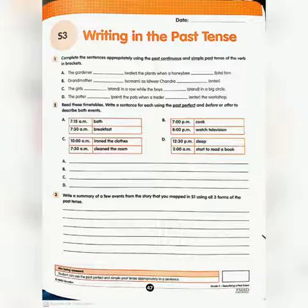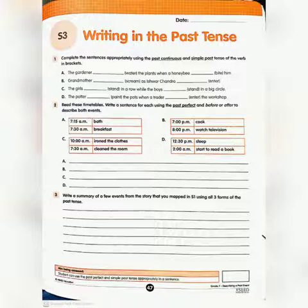For example: Rukmani was filling water in the pots when something fell in the river with a thud. She dived into the river and came out with an arrow marked with a royal symbol. Before she could think further, a soldier came running towards her. He praised her for the act and took the arrow from her.